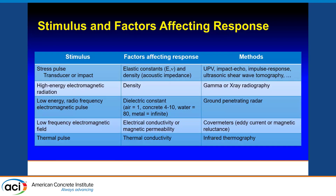Let's look at common NDT methods and their stimuli, the factors that affect the response, and which methods use those combinations. The stress pulse is probably the most widely used in NDT. Tapping and listening is one way of doing a non-destructive evaluation. We apply a stress pulse by mechanical impact or by transducers. The factors that affect the response to that stimulus are the elastic constants — modulus of elasticity and Poisson's ratio — and the density.